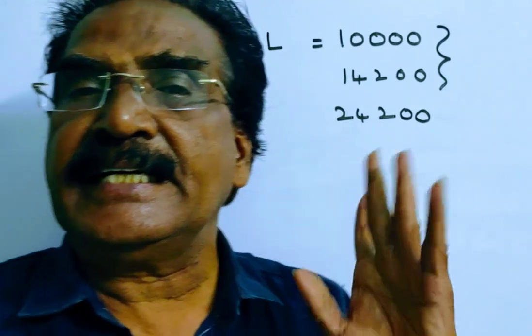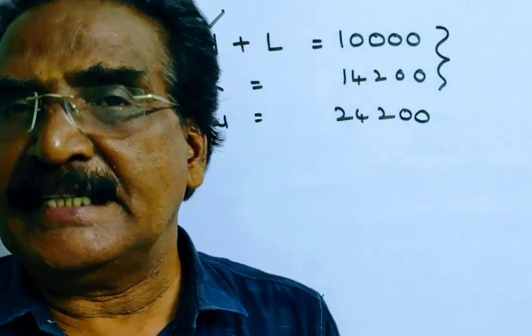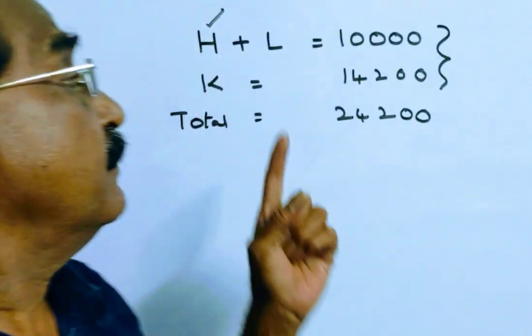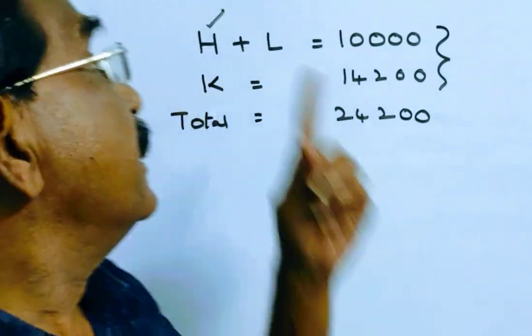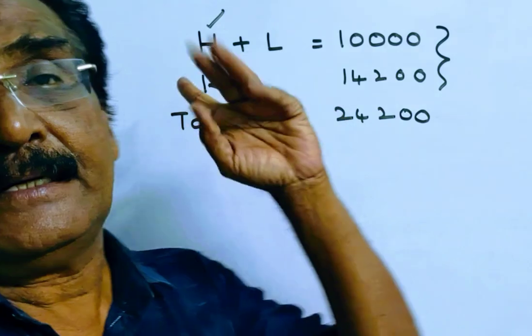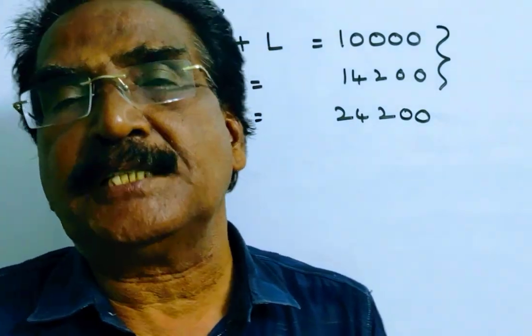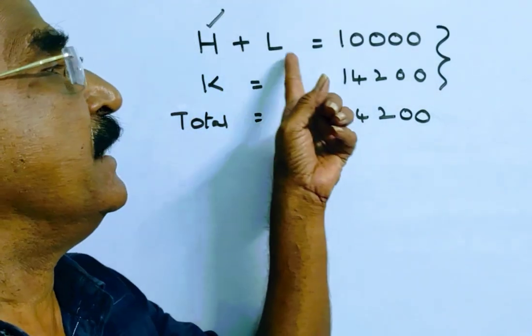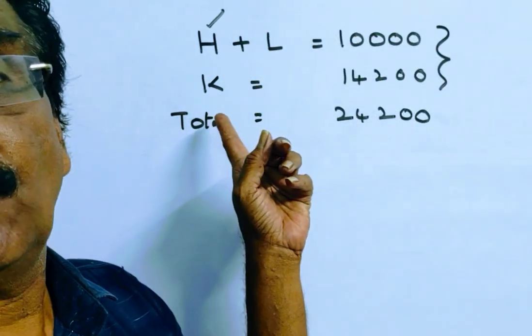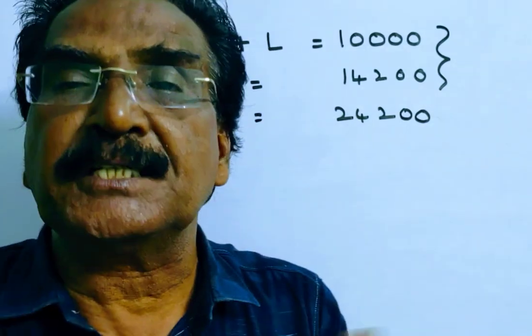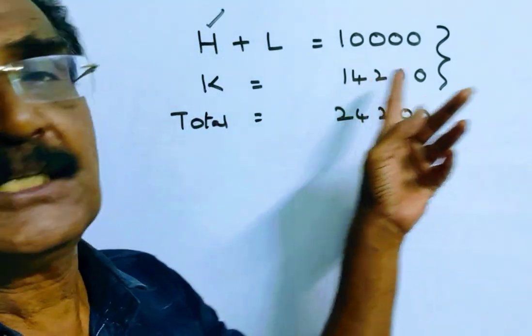See friends, in an election, Kamal gets 42% more than the votes polled by Hari and Lalith. Friends, say the votes polled by Hari and Lalith is 10,000. Then the votes polled by Kamal will be 42% more, means 14,200.